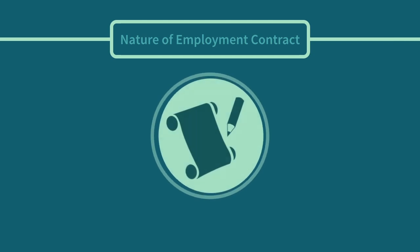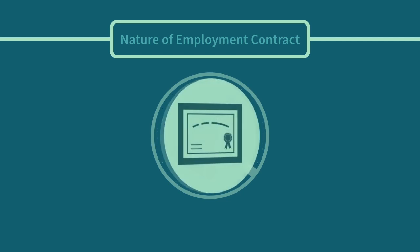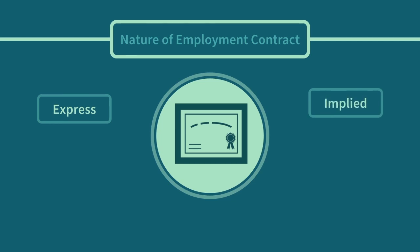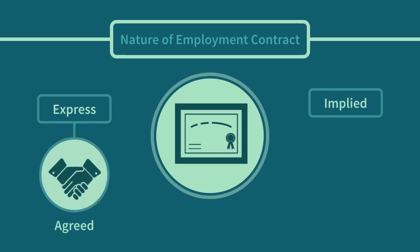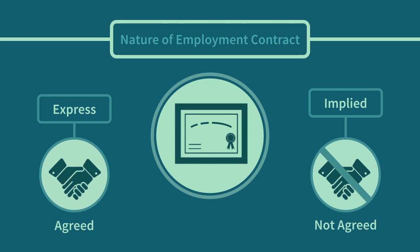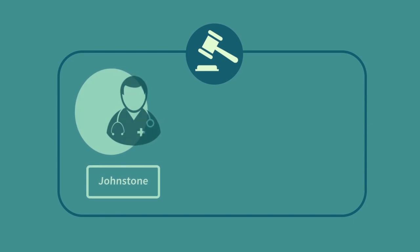There is no requirement for a contract of employment to be in writing. All employees, whether or not they have ever been given a written document called a contract, will be employed under a contract of employment. The terms of a contract of employment can be express or implied. Express terms are those that are agreed between the parties — the agreement may have been verbal when the offer of employment was made or may have been recorded in writing. Implied terms are terms which have not been agreed between the parties but which nevertheless form part of the contract of employment. These terms are implied into the contract either to make the contract workable, because of custom or practice, or because of a particular piece of legislation. Although where the implied term is necessary to give effectiveness to the contract, the implied term will take precedence over the express term, as held in the case of Johnston v Bloomsbury Health Authority.